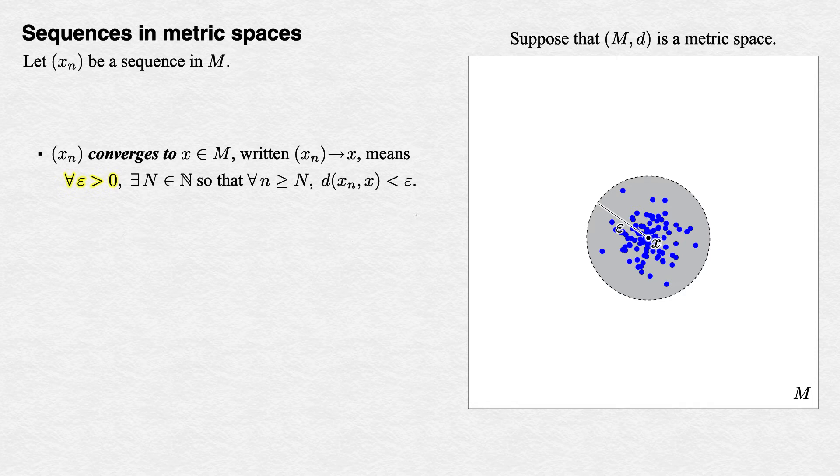Remember, this must work for every epsilon > 0. But as long as no matter how small we make epsilon, we can find an N that works, then we have convergence.